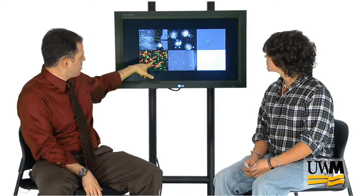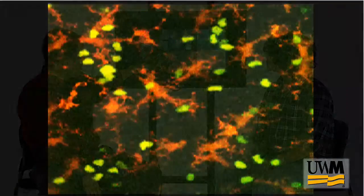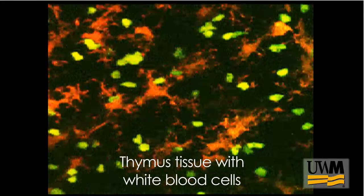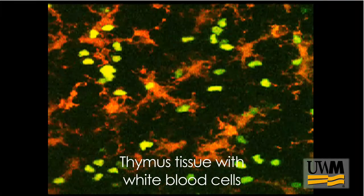In the immune system these are thymocyte cells. These are T cell precursors shown in green associating with dendritic cells in orange. And we're interested in measuring the associations and quantifying them in various populations of thymocytes.